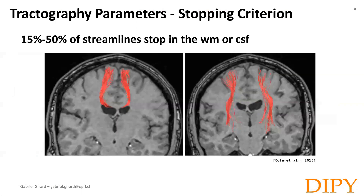Another important thing to know is that although we are using an accurate white matter mask for tractography, it is very likely that a large fraction of the reconstructed streamlines will either end in the white matter or in the CSF. This varies with the quality of the diffusion data and the tractography algorithm. On clinical data, you should expect somewhere between 15 to 50 percent of streamlines having non-gray matter ending locations.